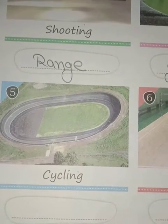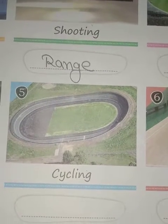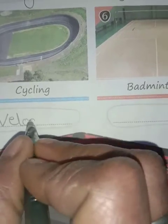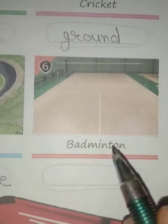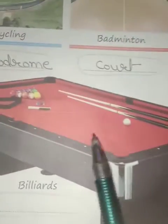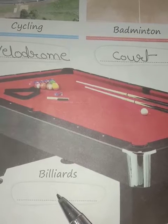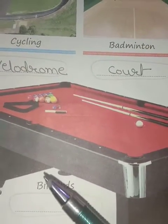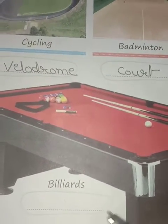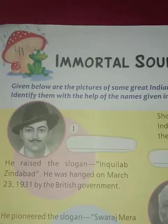Fifth is cycling, also called bicycling or biking. Where is cycling played? The answer is velodrome. Sixth is badminton — where is badminton played? The answer is court. Seventh is billiards, any of various games played on a rectangular table. Where is billiards played? The answer is table — T-A-B-L-E.